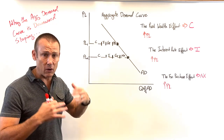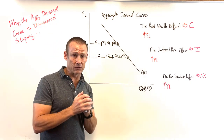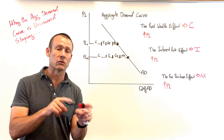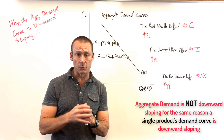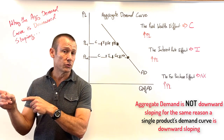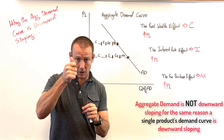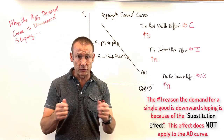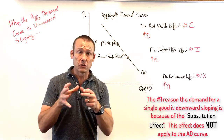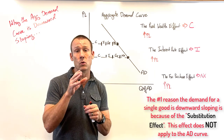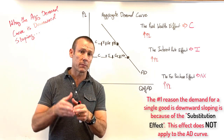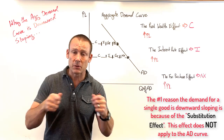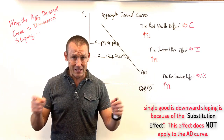Why is aggregate demand downward sloping? Importantly, the AD curve is NOT downward sloping for the same reason the demand for a single good is downward sloping. The demand for a single good slopes down mainly because of the substitution effect: when the price of a good goes up, ceteris paribus, we substitute away to cheaper substitute goods. This works because we assume all other prices remain constant, making them relatively cheaper.